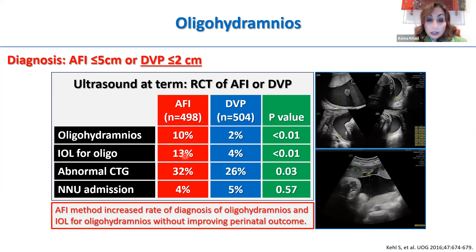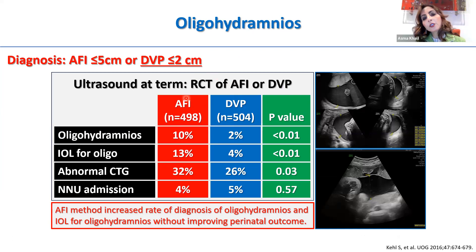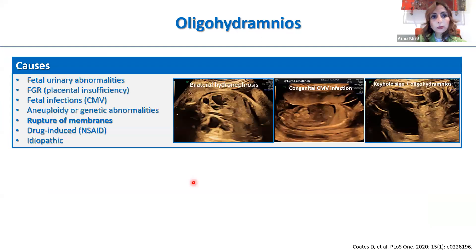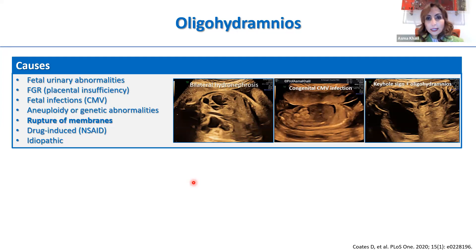Regarding oligohydramnios, we agreed DVP is better, with a cutoff of 2 cm. An RCT of singleton pregnancies at term using either AFI or DVP demonstrated that using AFI diagnoses more oligohydramnios — 10% compared to 2% — and leads to more inductions of labour and more abnormal CTGs, but with no real benefit and no significant difference in NICU admission or other perinatal outcomes. So more interventions without improving perinatal outcomes. Causes of oligohydramnios include fetal abnormalities, particularly urinary abnormalities like bilateral renal agenesis or urinary obstructive uropathy, small babies due to placental insufficiency, fetal infection such as CMV, and chromosomal/genetic abnormalities. The commonest cause in the third trimester is rupture of membranes. Take a drug history as well.